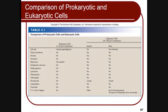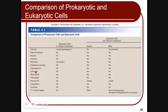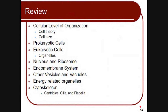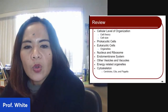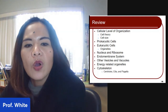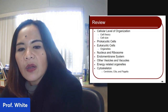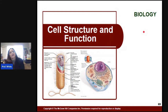I'd like you to read on your own about the differences between prokaryotic and eukaryotic cells in terms of diameter and size, and what is present in animal and plant cells. Cell wall is absent in animals and present in plants. There are no lysosomes in plants, no chloroplasts in animals, and no centrioles in plant cells. To recap: we talked about cell theory, why the cell is small, prokaryotic versus eukaryotic cells, nucleus and ribosomes, the endomembrane system, vesicles and vacuoles, energy-related organelles, and the cytoskeleton. Thank you for listening — this is Professor White, and I will see you in class.